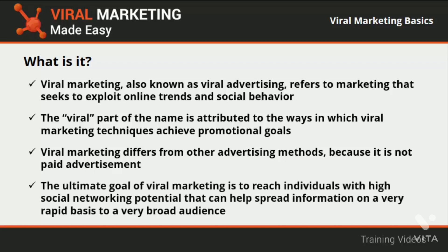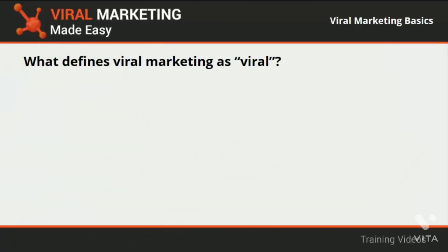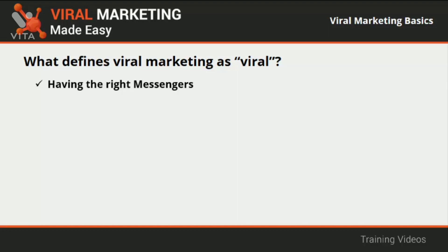The ultimate goal of viral marketing is to reach individuals with high social networking potential that can help spread information on a very rapid basis to a very broad audience. Viral marketing that works needs to meet three specific criteria to transform an ordinary message into a viral one. The first is having the right messengers. Three types of messengers intervene in the process of causing information to go viral. The first type is the market expert — the first individual or group to be exposed to the message before it goes viral, because market experts are in the know and up to date with trends.